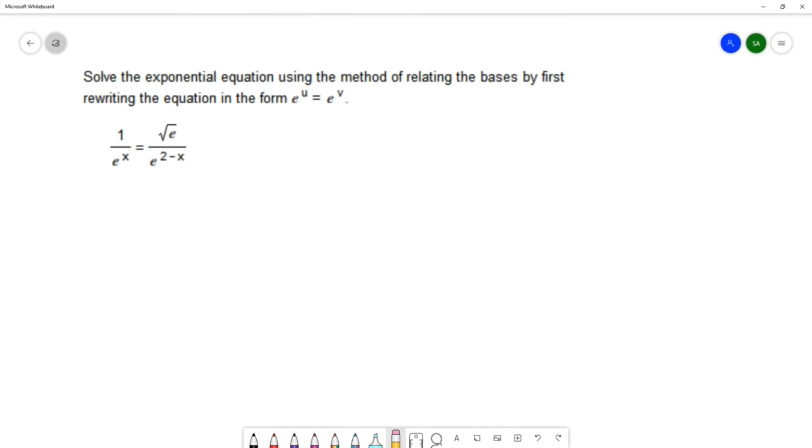The method that we're going to be using is called relating the bases and as stated in the directions we first want to rewrite the equation in this format. And the reason we want to rewrite it in this format e^u = e^v is because exponential functions have this property called the one-to-one property